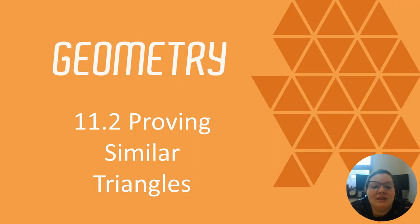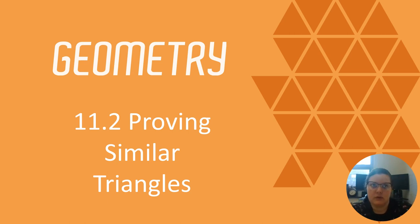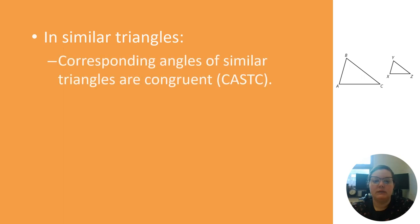Welcome to Geometry lesson 11.2. Today we're talking about proving similar triangles. This should feel familiar — we've worked with proving congruent triangles before, so this has a lot in common with that. Remember CPCTC that we learned? We use that in proofs instead of using the definition of congruent triangles; we can just cite CPCTC as our reason.